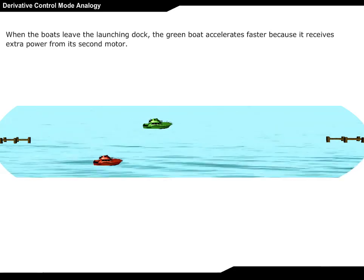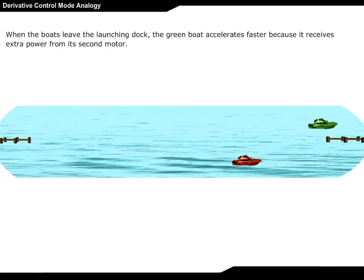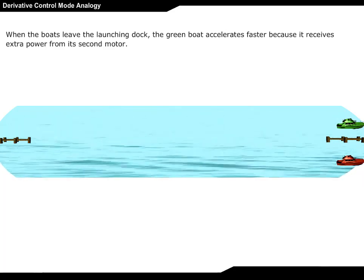When the boats leave the launching dock, the green boat accelerates faster because it receives extra power from its second motor.